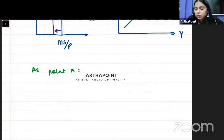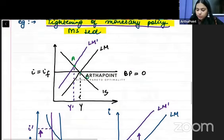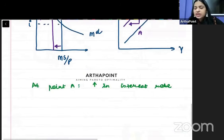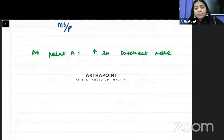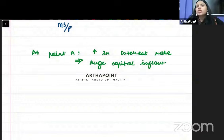At point A, there is an increase in the interest rate — your equilibrium interest rate has increased. Whenever there is an increase in interest rate, what will happen to capital? There will be huge capital inflow. A lot of capital will start coming into the economy — there will be huge capital inflow.